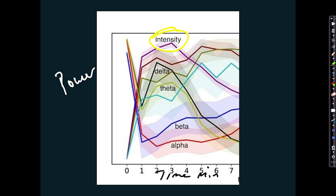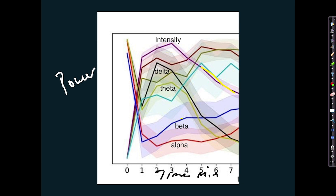Starting at zero, the individual is given the drug and you get a quite dramatic and rapid increase in intensity, peaking at around three or four minutes — as we would expect with DMT — and then it starts to drop down again. We also see down in the beta and alpha bands a drop, suggesting this desynchronization particularly in the alpha band. That's consistent with what we've seen before.